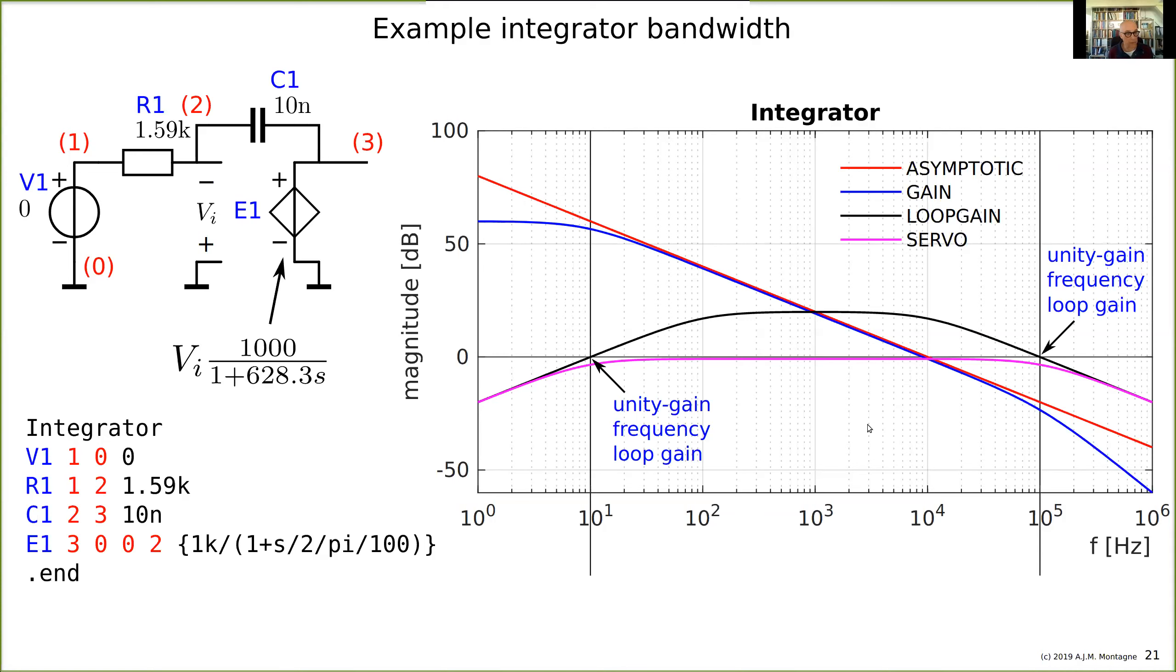Unity gain frequencies are important. Servo bandwidth is this, and we have an instruction in SLiCAP for this: find servo bandwidth. It calculates the asymptotes and the intersection points and will give you the range, and we can use it later on for designing.